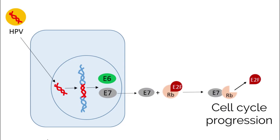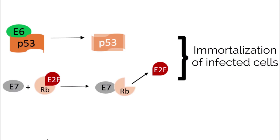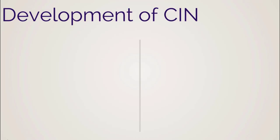Many times, these infected cells are recognized by the immune system and destroyed. However, sometimes infected cells are not destroyed and persistent infection occurs. HPV is very common. Over 40 mucosal HPV types can infect the genital tract. But not everyone infected with HPV has CIN. This depends on both the subtype of the virus as well as the persistence of the infection.